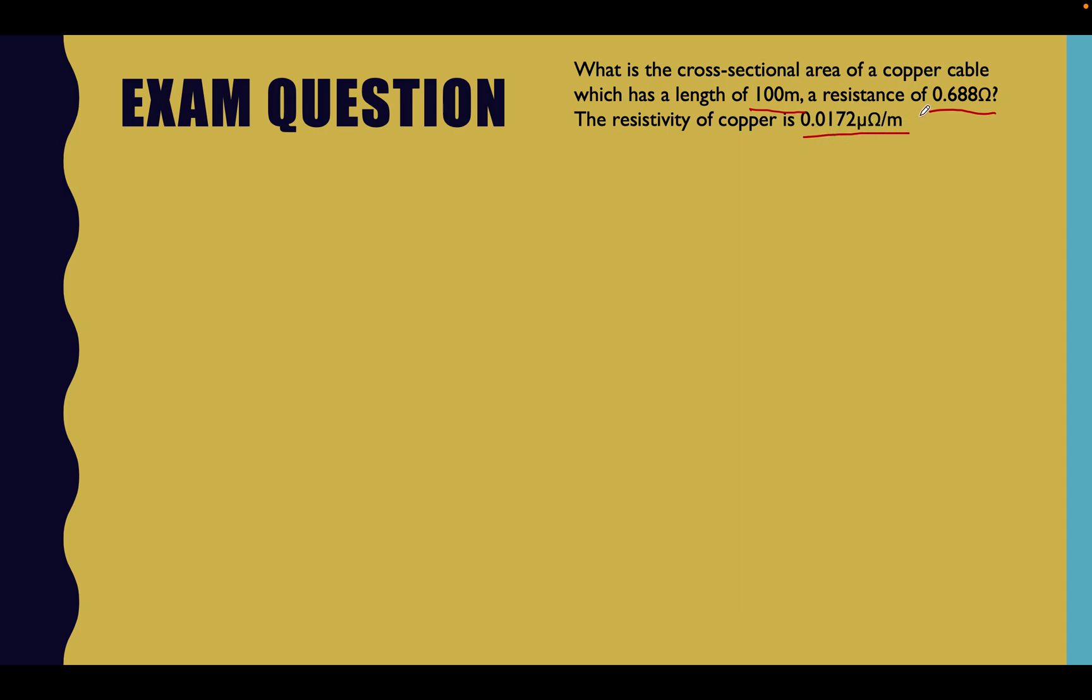So we need to be thinking about things straight away with this. We've got the length of the cable. We've got the resistance. We've been asked for the cross-sectional area and we know this is the resistivity of copper. So straight away I'm looking at this and seeing that it's micro-ohms. So I'm just going to quickly note this and put... I know micro is minus 6. Let's just leave that over there so we can remember that later on.